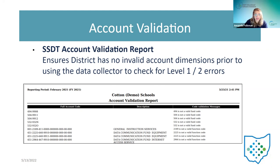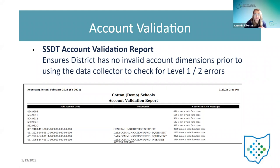The next item is the account validation report. This helps ensure there are no invalid account code dimensions prior to the data collector check. Per ODE, there are guidelines for which codes are valid each year and which can be used together. This report lets them pre-check their accounts so they can try to avoid errors later when submitting through the data collector.